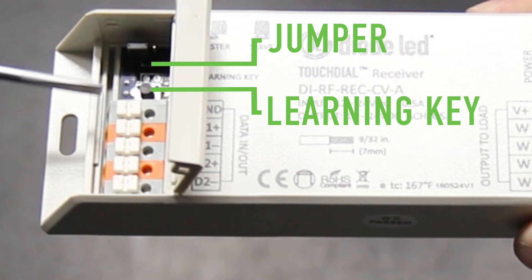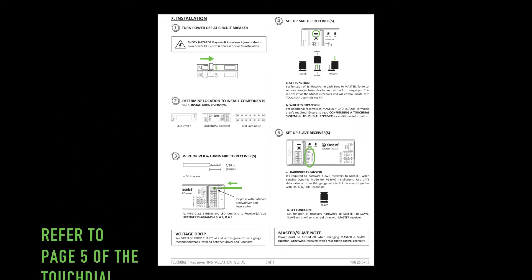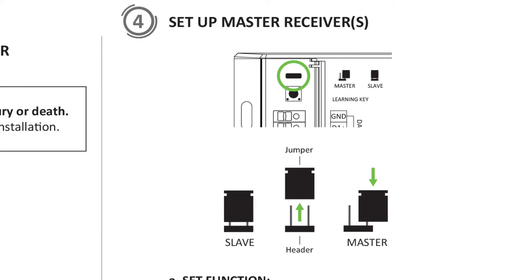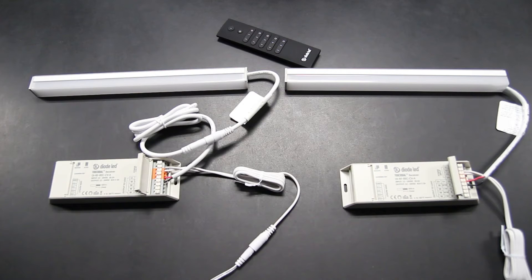Locate the jumper and learning key found on the left side of the TouchDial receiver. Confirm the jumper is sitting on one header pin. If it's not, move the jumper to a single header pin using your fingers or a set of needle nose pliers. Once those details have been confirmed, reconnect power to the TouchDial receiver.